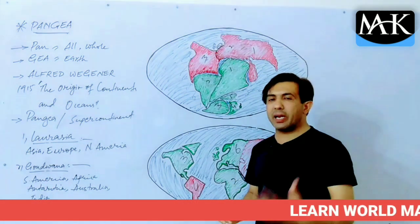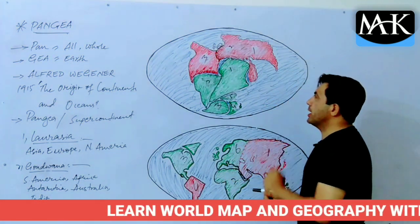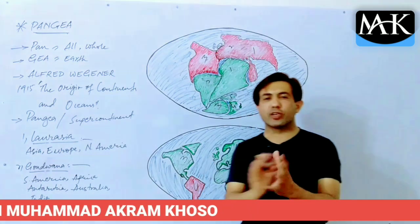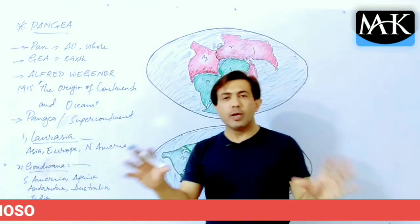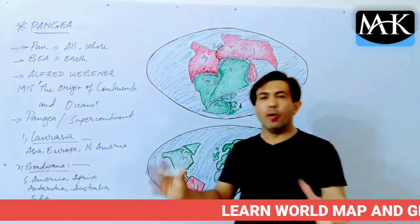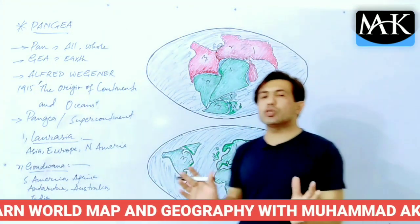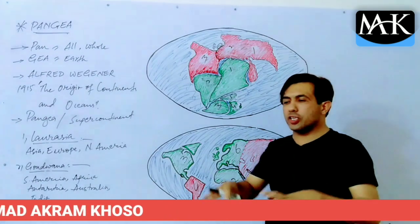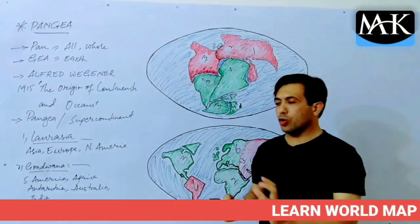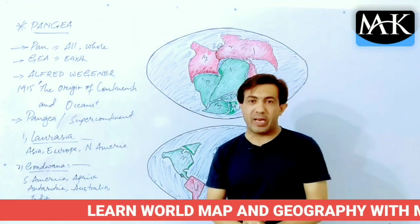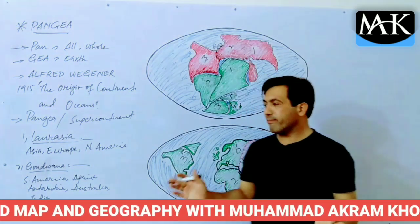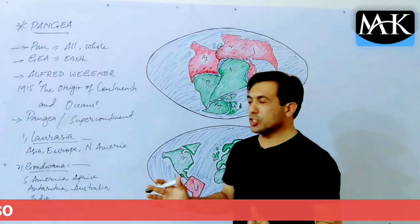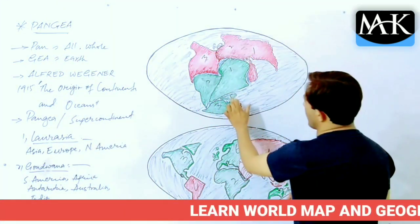How did Pangea break into the seven parts we now call continents? Plate tectonics means the movement of the plates. There are two types of movements in the Earth's lithosphere — the surface part of the Earth: convergence and divergence. When plates converge, mountains and hills are made.